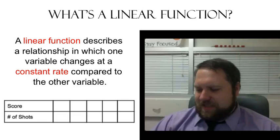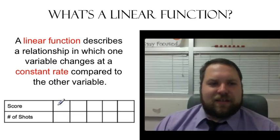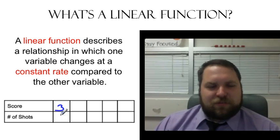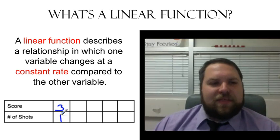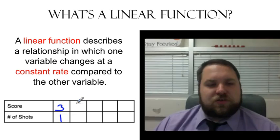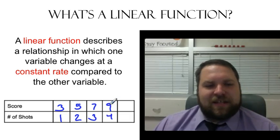Suppose you're at a basketball game. And you walk in, and there's been one shot happen, and the team has three points. So they made a three-pointer right off the bat. And then, every shot after that, they just did two-pointers. They didn't shoot another three. So, after two shots have gone in, they now have five points. After three shots have gone in, they have seven. After four shots have gone in, they have nine.